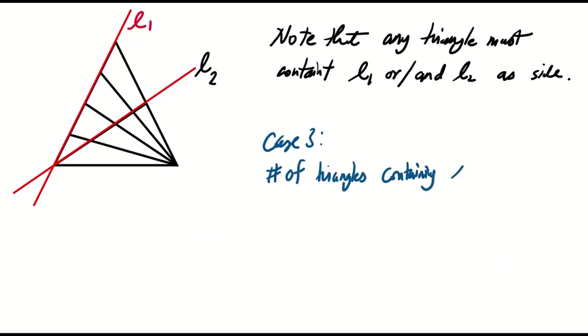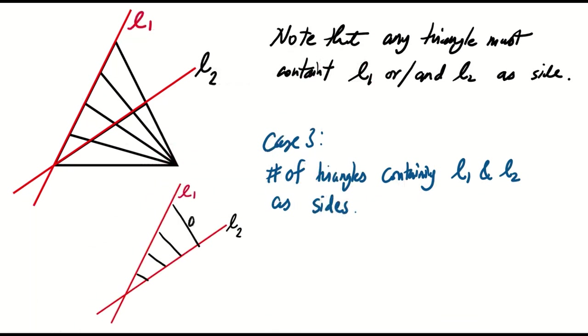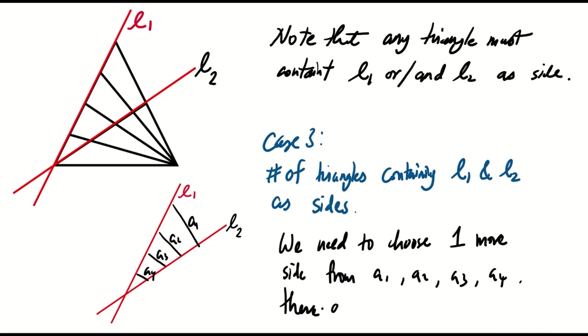In case three, we count the number of triangles using both L1 and L2 as sides. With two sides fixed, we only need one more side, which can be any of the line segments a1, a2, a3, or a4. This presents us with 4 choose 1 possibilities, which is four.